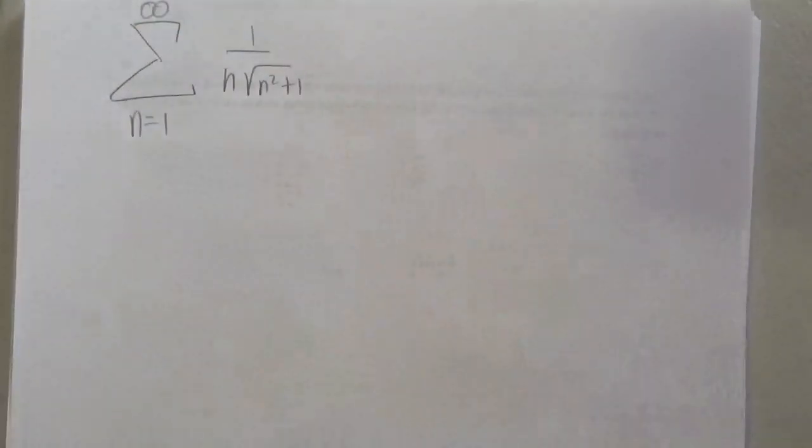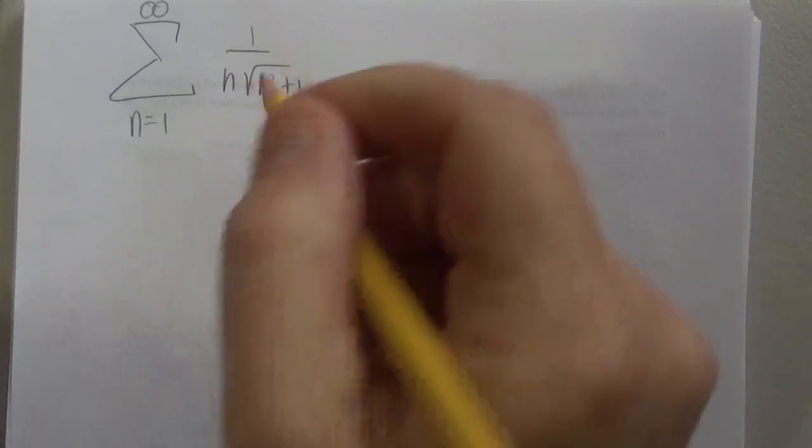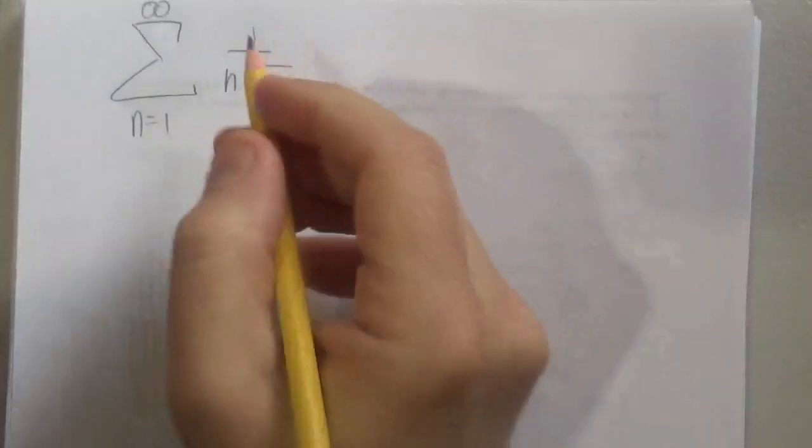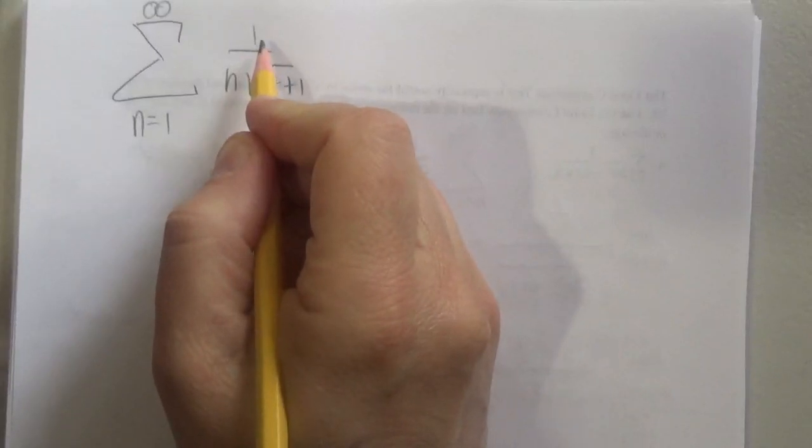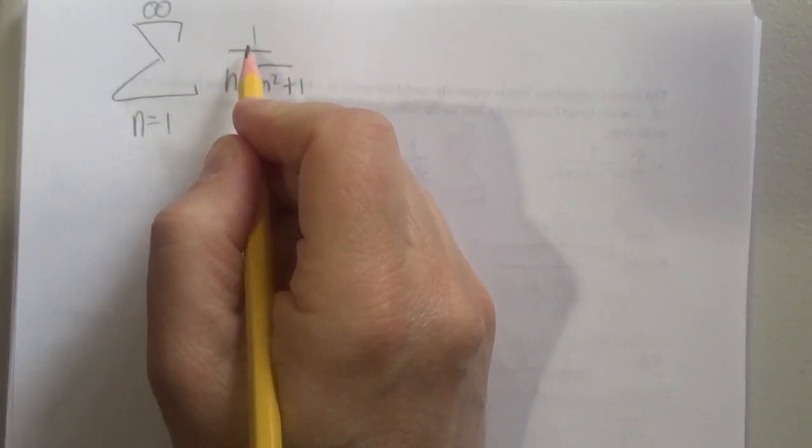Hey, here's another series question with a bunch of radicals and n's. The first thing I do is look at this, and the numerator really has nothing else other than a 1, so my numerator has to be 1 for the series I'm using to compare it to.